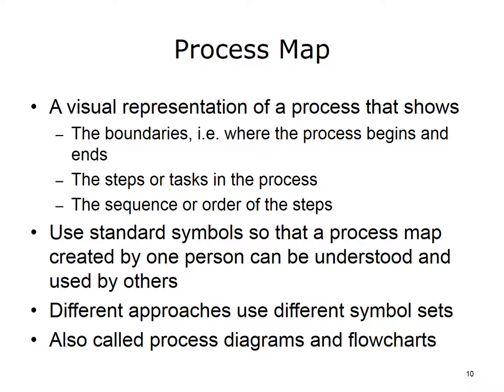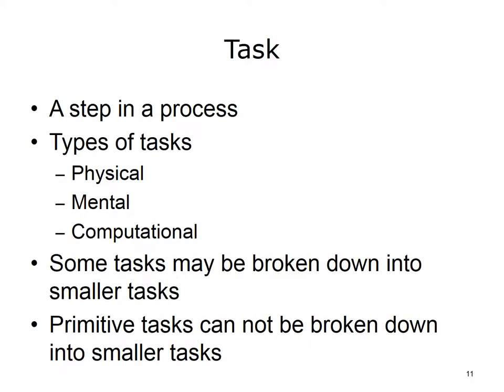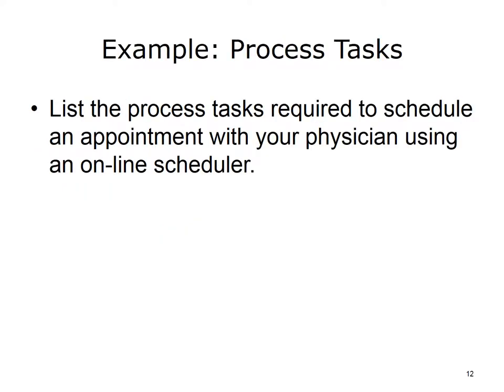A task, in process lingo, means the same as it does in everyday use — a step in a process. We further differentiate physical, informational or computational, and mental tasks. Physical tasks are actions that humans or machines perform — for example, moving supplies from the loading dock into a manufacturing facility. Mental tasks are those that are performed by the human mind — for example, reading or reasoning. Computational tasks are those performed by humans or machines that involve manipulations of values or calculations. It is also helpful to think of tasks in terms of composite or higher-level tasks that are composed of smaller tasks, and of the primitive tasks that cannot be broken down into smaller or sub-tasks.